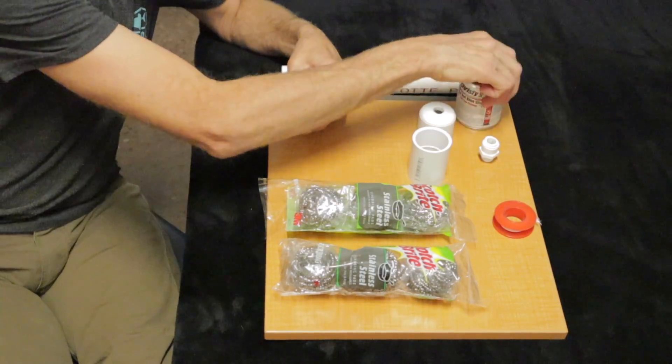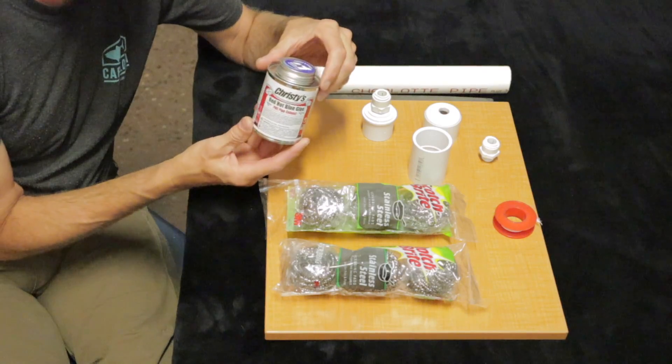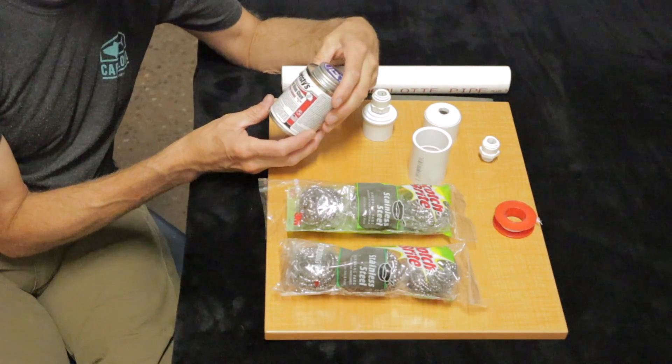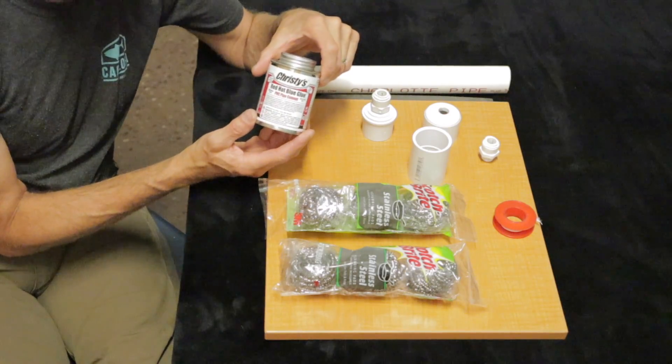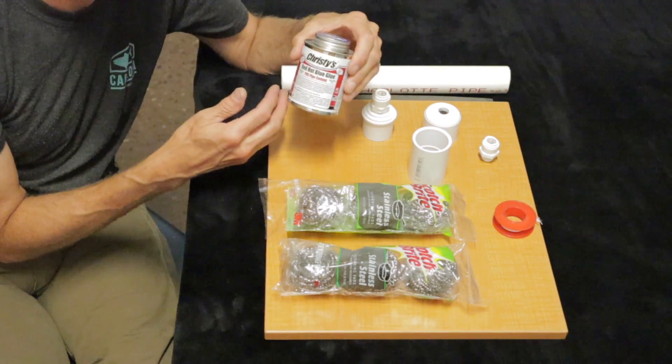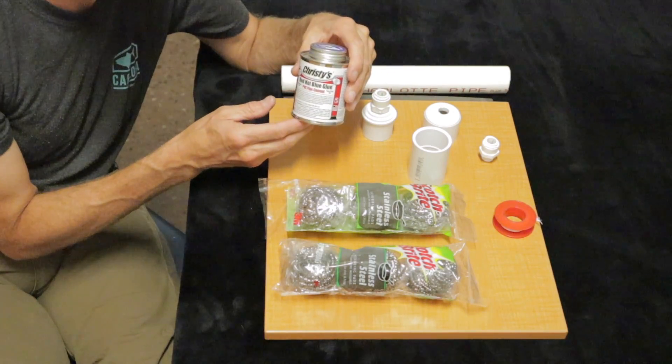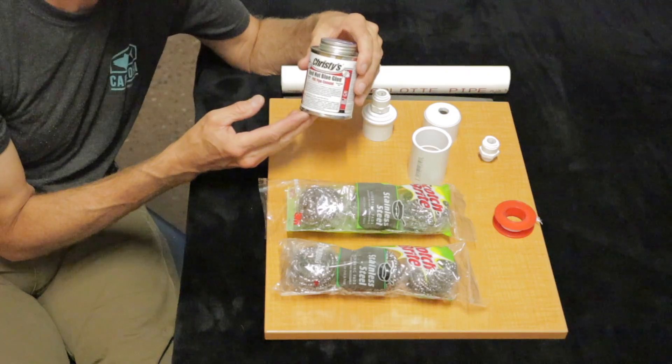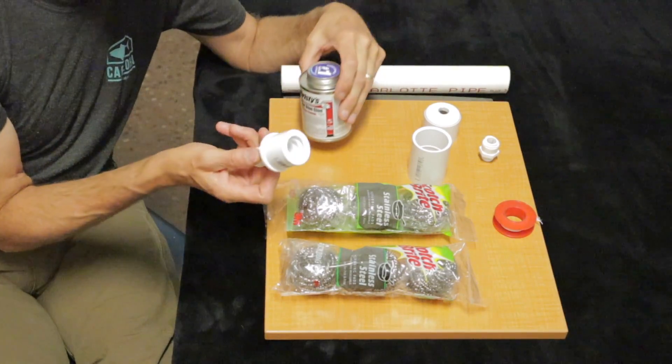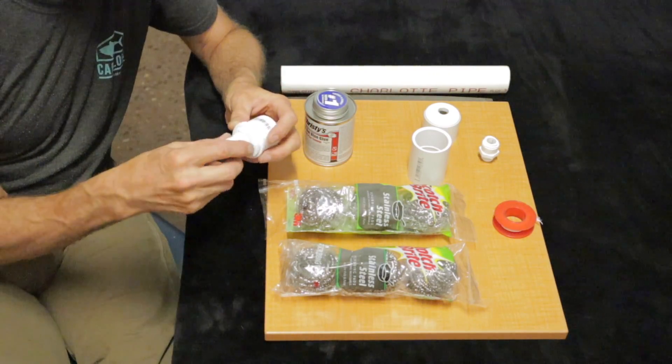Each one of these adapters, you're going to use some PVC adhesive. You can get this at Home Depot, Lowe's. It's one of the most common ones. The Christie's Red Hot is what I use because it seems to be the strongest. This doesn't have a lot of pressure in it when it's pumped up, but it's going to have 60 to 70 pounds of pressure. So we want to make sure it holds together. So each one of these, you're going to put the adhesive on, glue it in, all three adapters.